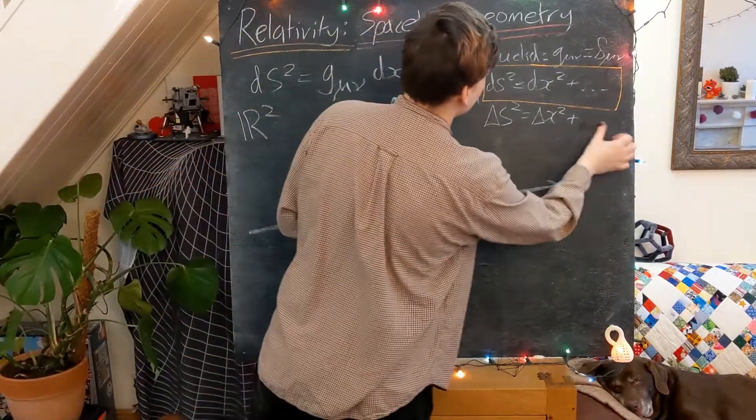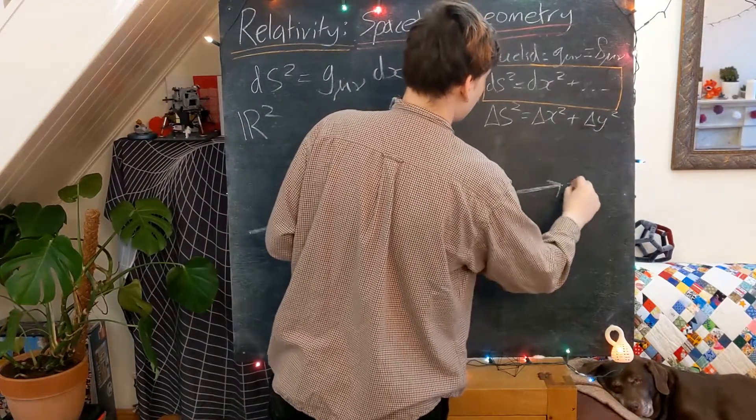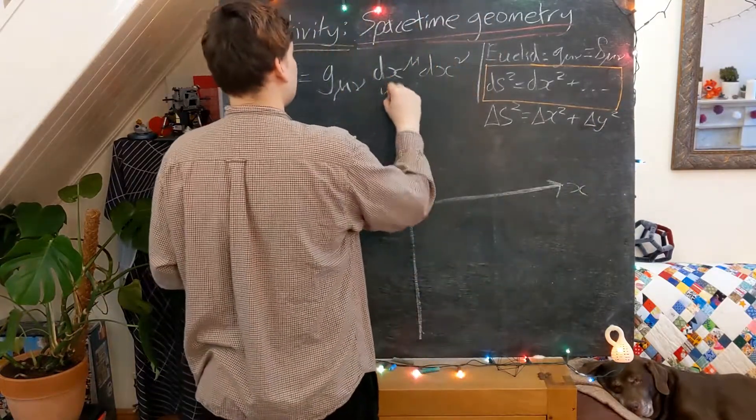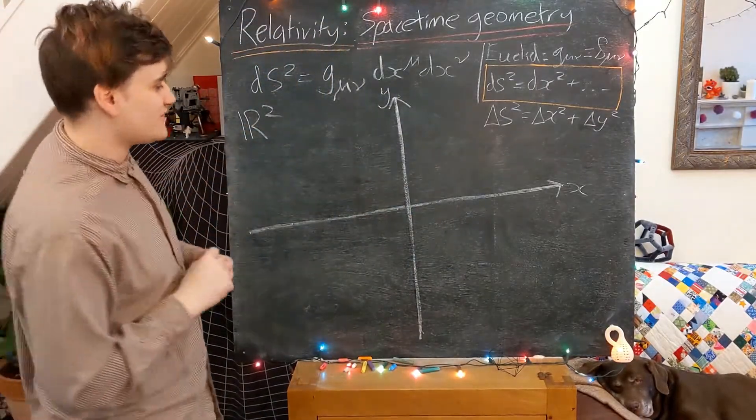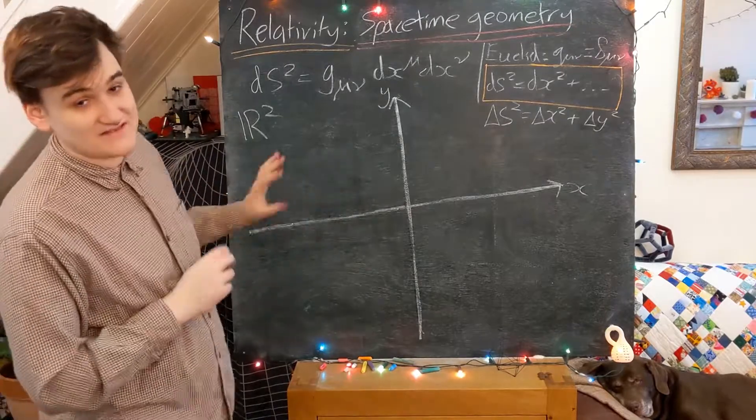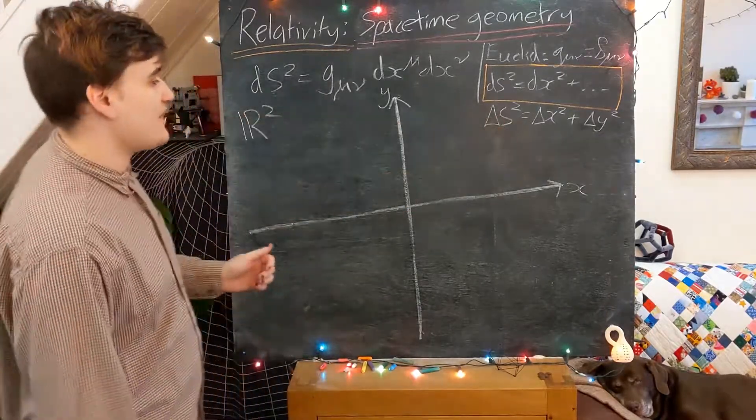Well we've got two coordinates, so it's just delta x plus delta y squared, if this is x and this is y. So remember we're just doing Euclidean geometry, this is a fairly simple space, R2, and it just has the fairly simple Euclidean metric.